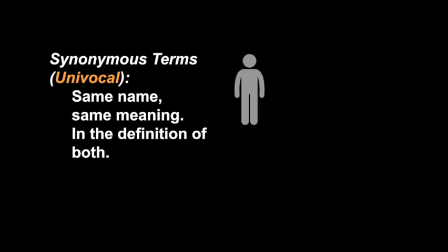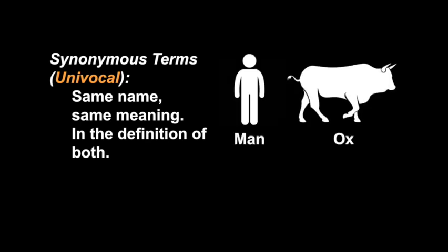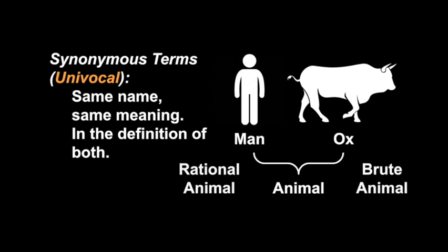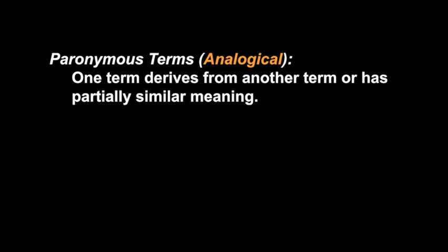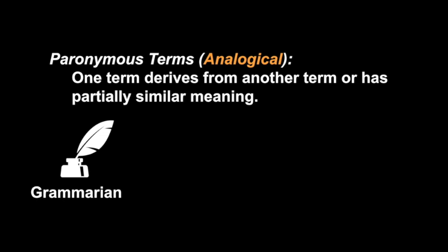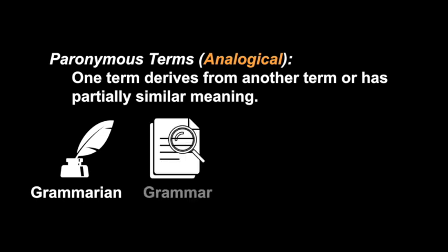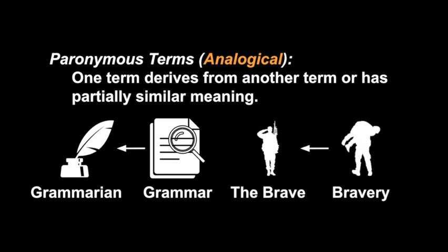Synonymous terms, or univocal terms, share the same name with the same meaning in the definition of both. So for a man and an ox, both have 'animal' in their definition because man is the rational animal and oxen are brute animals—animal means the same thing in both. Paronymous terms, or analogical terms, is where one term derives from another or has partially similar meaning. A grammarian, in Aristotle's example, gets its name from grammar. The brave get their name from bravery.